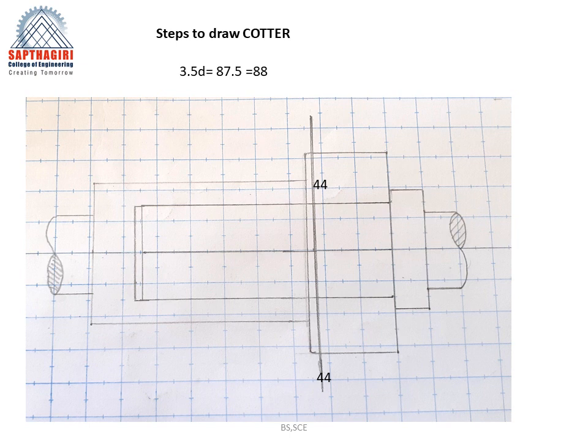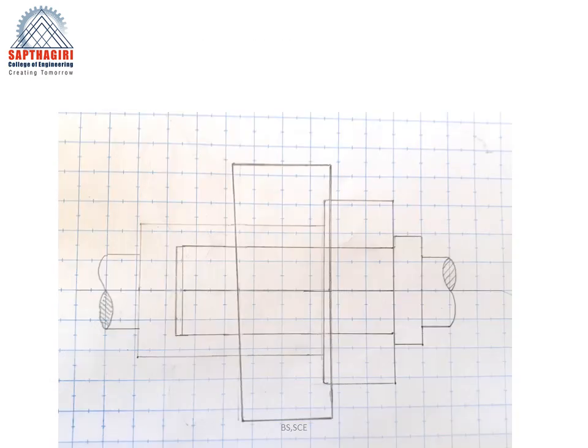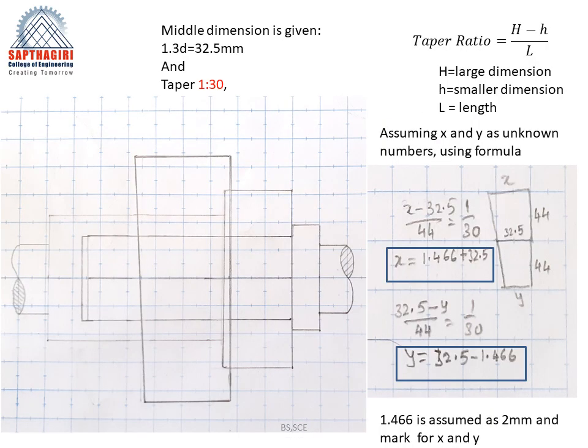The total length of the cotter is 3.5d, which is around 88 mm. So 44 mm on each side from the center. There must be a taper on the left-hand side. Let us see how to represent this taper of 1 is to 30.